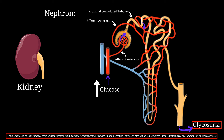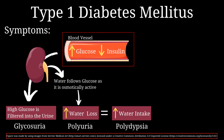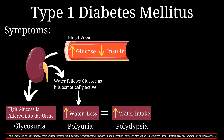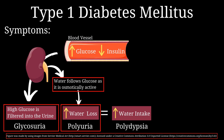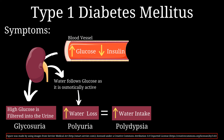In type 1 diabetes we have high glucose and low insulin levels. Since glucose is osmotically active, during its filtration by the kidneys water follows glucose, so in addition to glycosuria there is increased water loss from the kidneys. This increased urine output, or polyuria, can dehydrate the patient, urging them to consume more water — a symptom called polydipsia, with 'poly' meaning more and 'dipsia' meaning drinking.